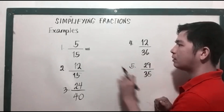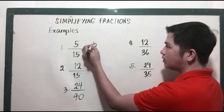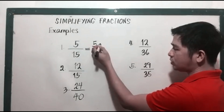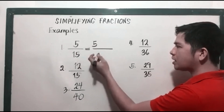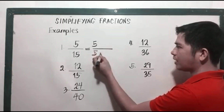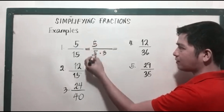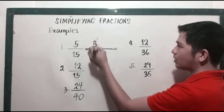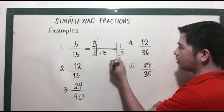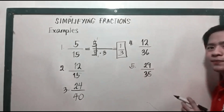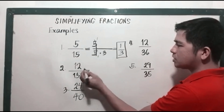For example, 5 can be factored as 5 times 1, or simply 5 since it's already a prime number. 15 can be factored as 5 times 3. The two 5s can be cancelled since 5 divided by 5 is 1, so we have 1 over 3, or one-third.